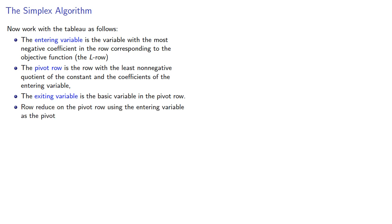We'll row reduce on the pivot row using the entering variable as the pivot, and then lather, rinse, repeat. The algorithm terminates when all coefficients in the L row are non-negative.